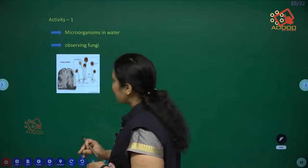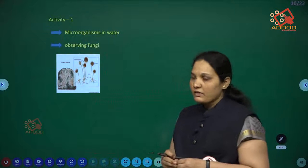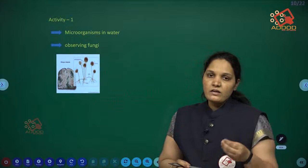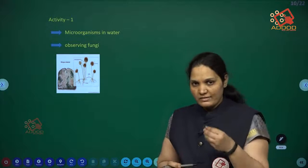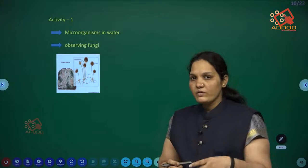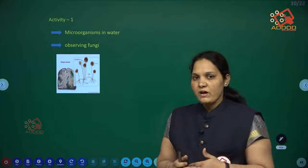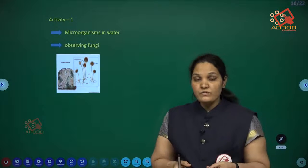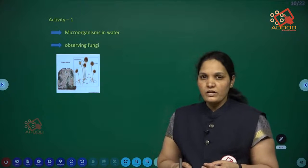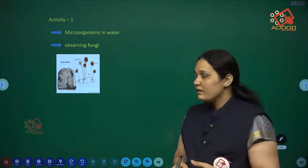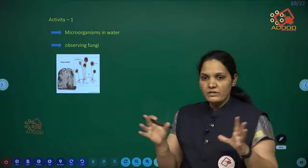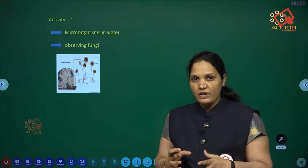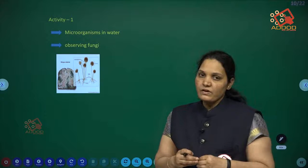Activity one: Microorganisms in water. Collect pond water, take a drop, put it on a slide, and observe under the microscope. In the previous chapter we learned about the parts and uses of the microscope. When we observe, we see different types of living moving particles.